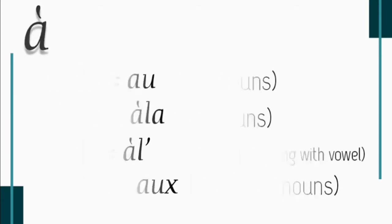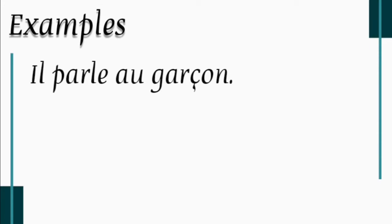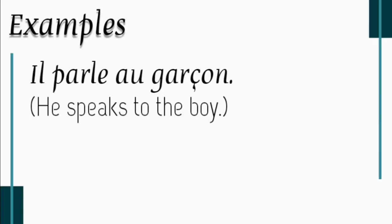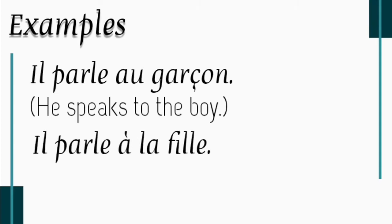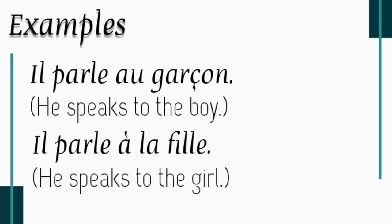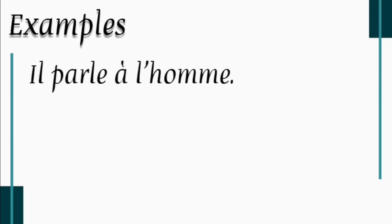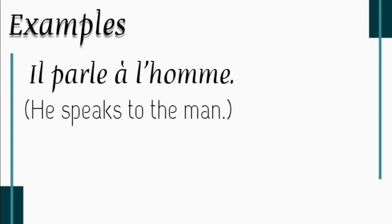Let's see them with examples. Il parle au garçon — he speaks to the boy. Garçon is masculine singular, so we use au. All these contracted articles — au, à la, à l', aux — mean 'to the' or 'at the'. Next: il parle à la fille — he speaks to the girl. Then à l': il parle à l'homme — he speaks to the man. Homme is masculine singular but starts with a vowel, so we use à l'.